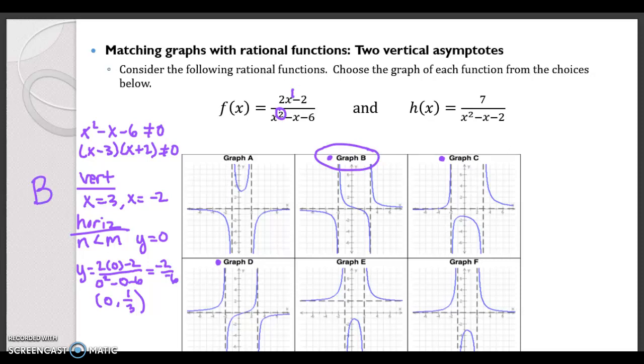Now let's look at h of x. h of x, the denominator can't equal 0, right? This is how we find our vertical asymptotes. So that's x minus 2 times x plus 1. So neither of those can equal 0.